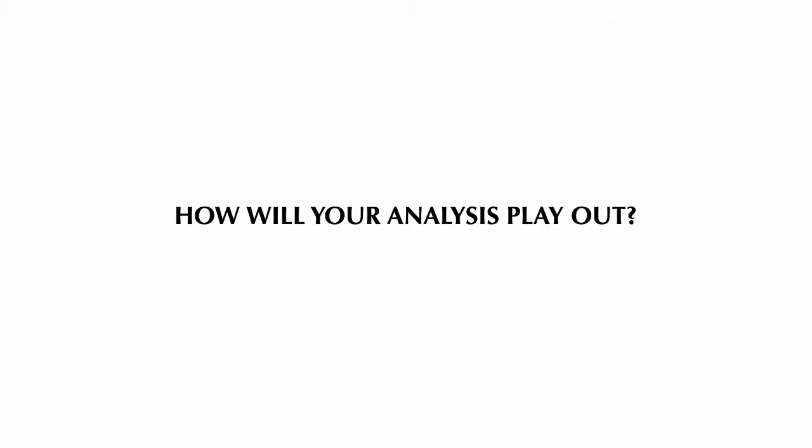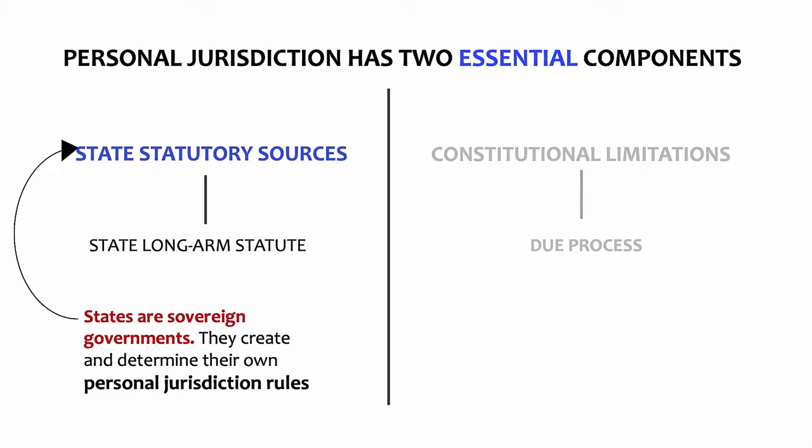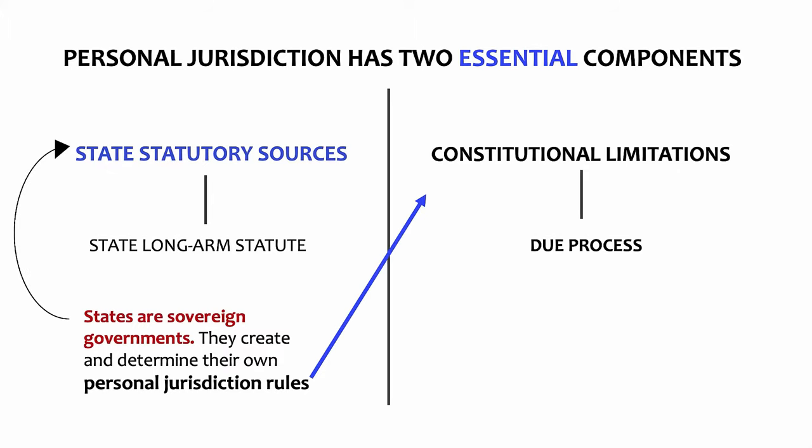How will your analysis play out with personal jurisdiction? In personam jurisdiction has two essential components: state statutory sources of personal jurisdiction and constitutional limitations to personal jurisdiction. States are sovereign governments. They create and determine their own personal jurisdiction rules, and these rules are called long-arm statutes. The rules on whether a state has personal jurisdiction over a defendant is left to each individual state. But if each state gets to decide under what circumstances its courts can legally bind a defendant to a judgment, that seems like a lot of unchecked power. This is why these state laws, also called long-arm statutes, are subject to constitutional checks and constitutional limitations.